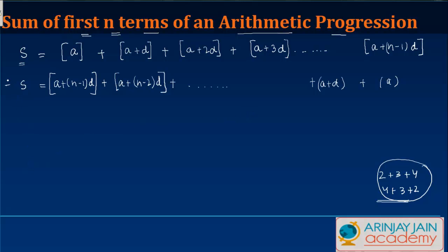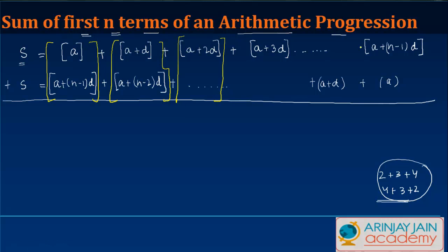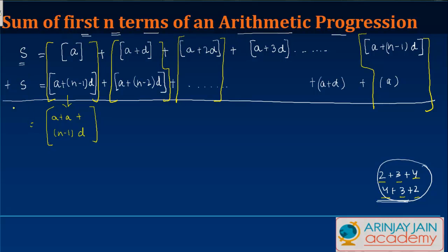You must be wondering why I am doing this. When I do the sum of these two — adding the forward and reverse series term by term — what I get here is: adding these two together, these two together, and corresponding numbers. Because the number of terms are the same, each pair gives a plus a plus n minus 1 times d.